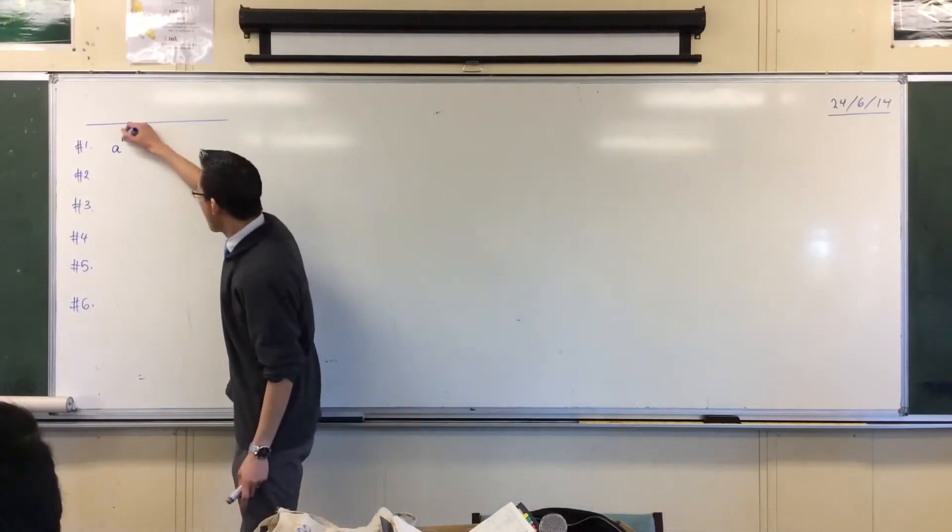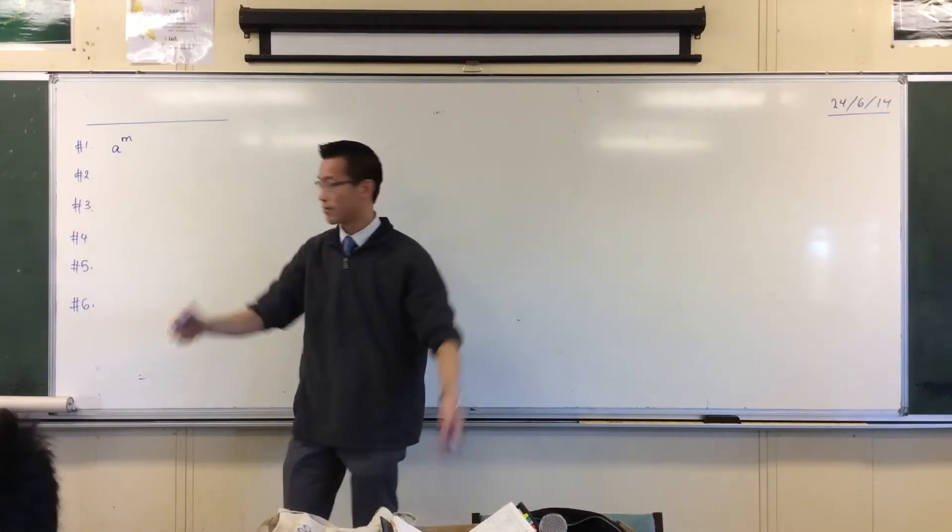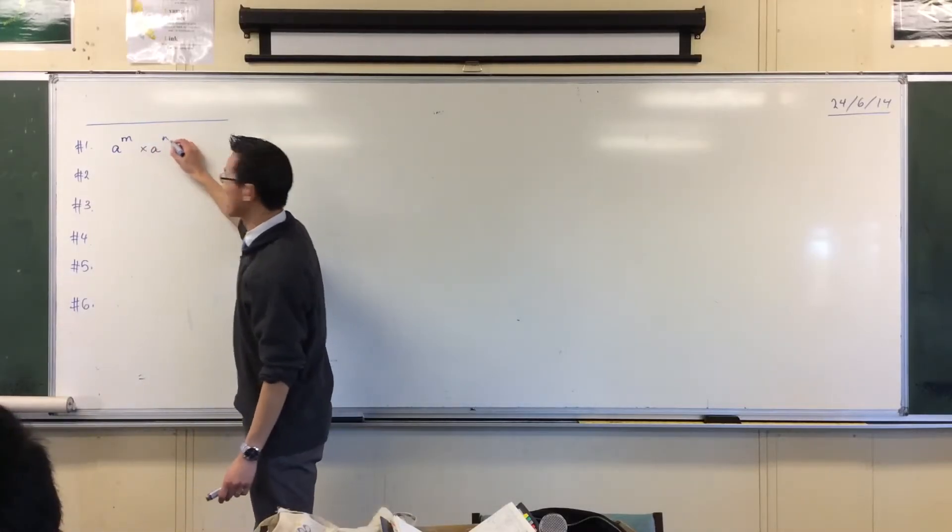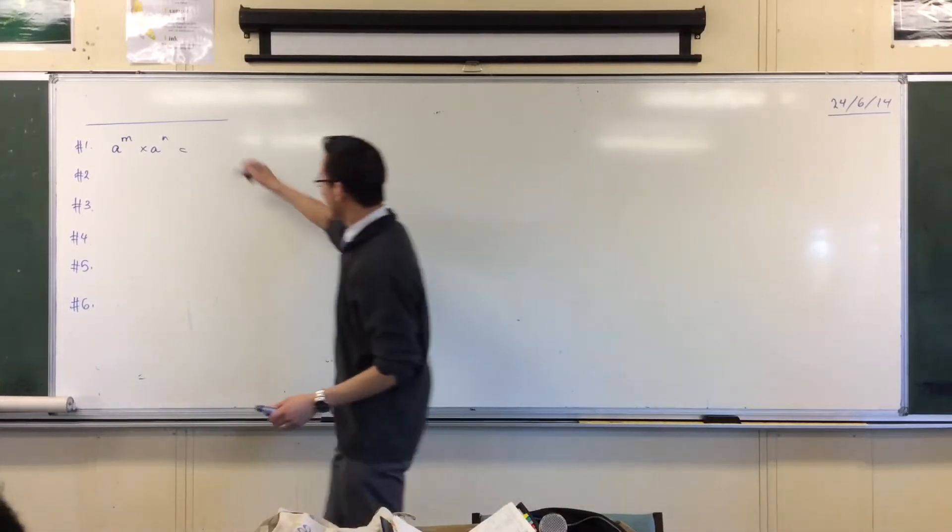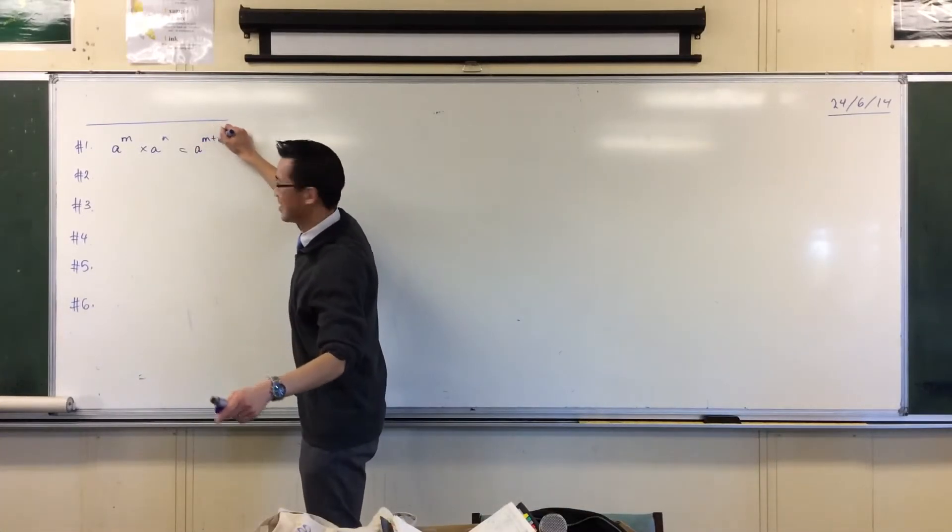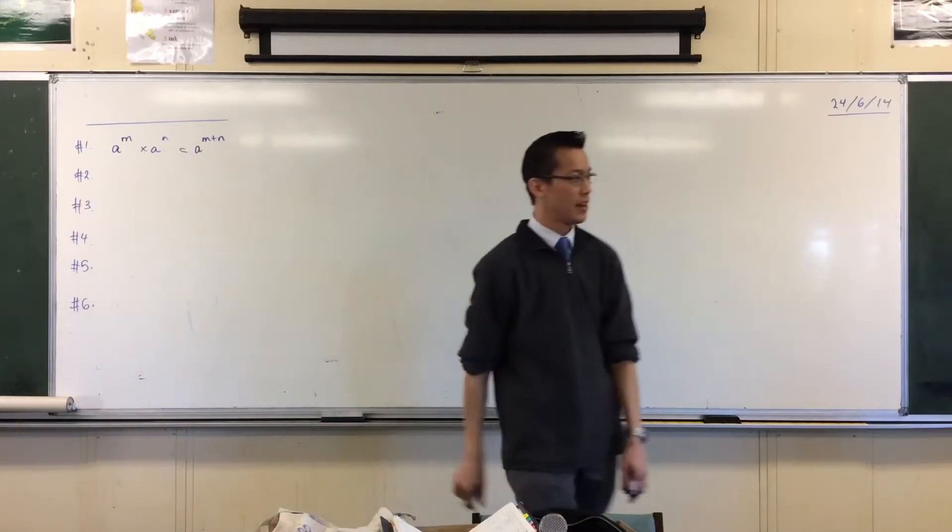A to the power of something, times a to the power of something else. What did we do to the indices? A to the power of n plus n. Good, m plus n. We added the indices together.